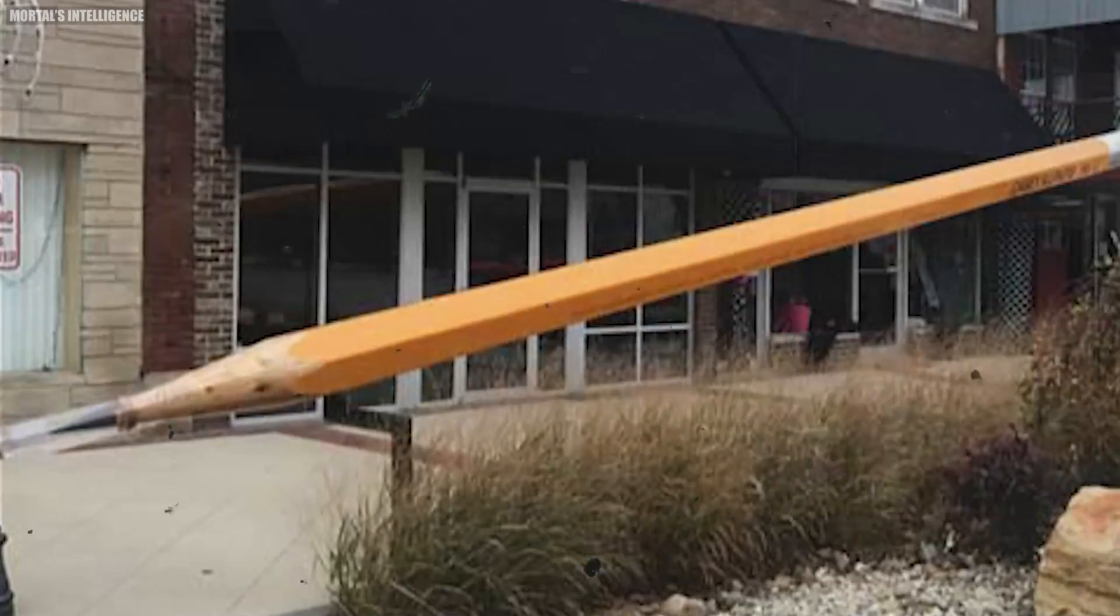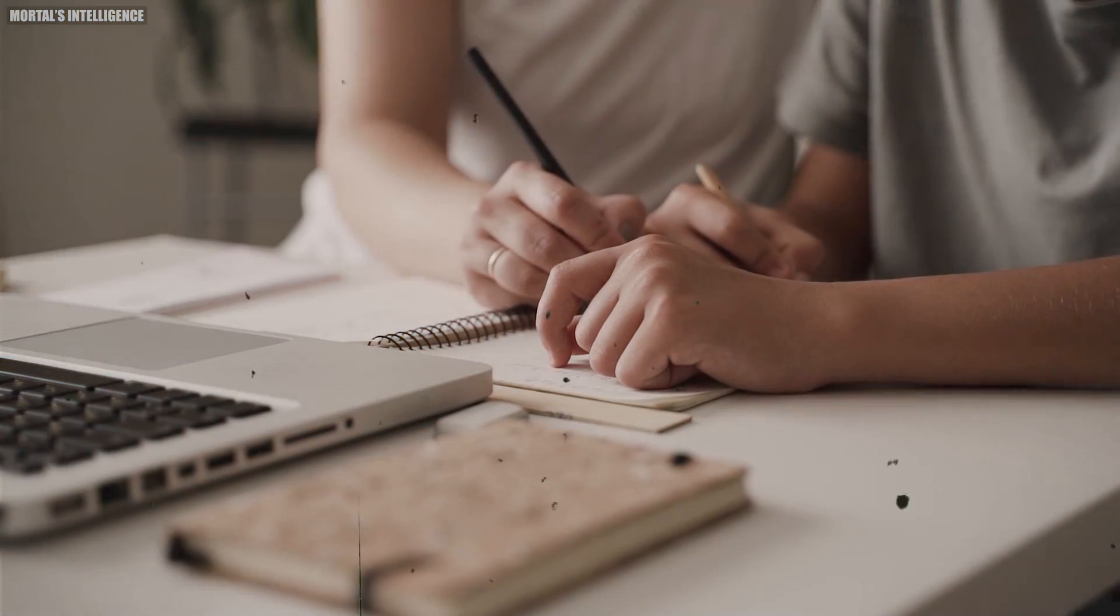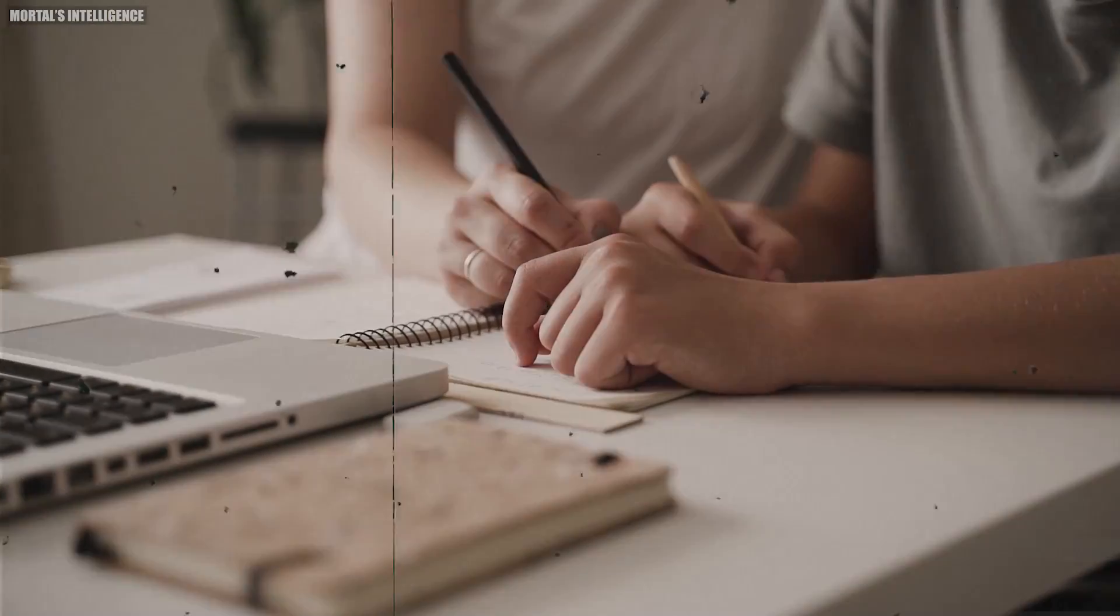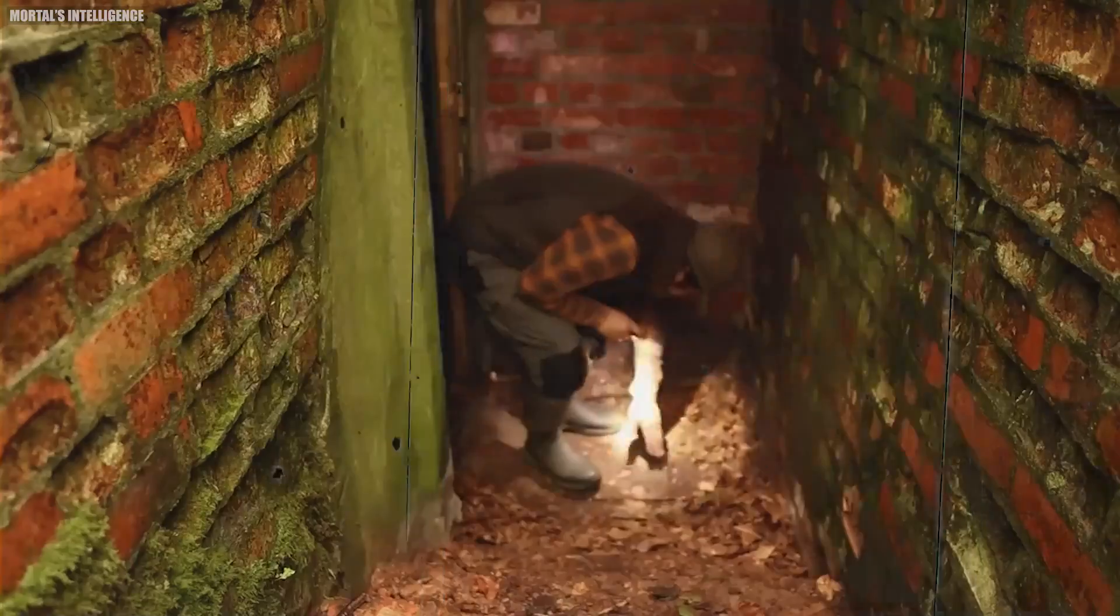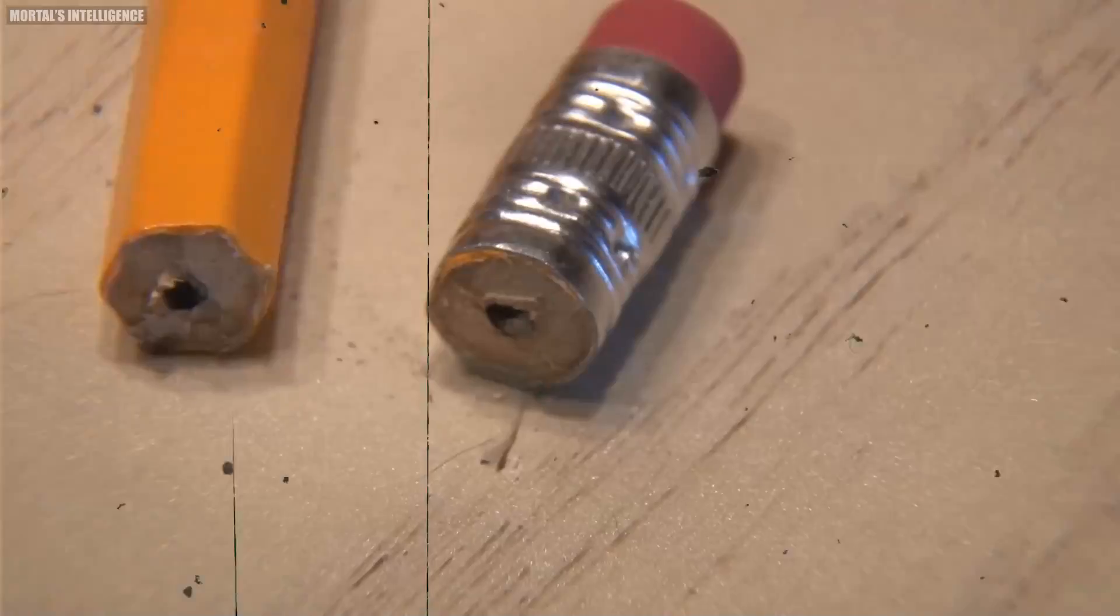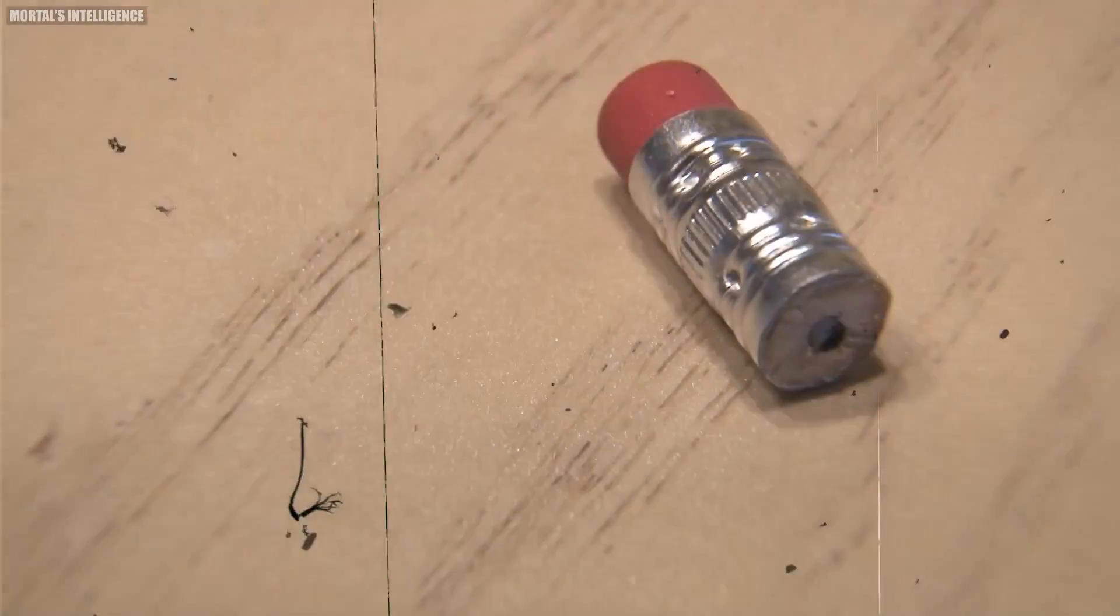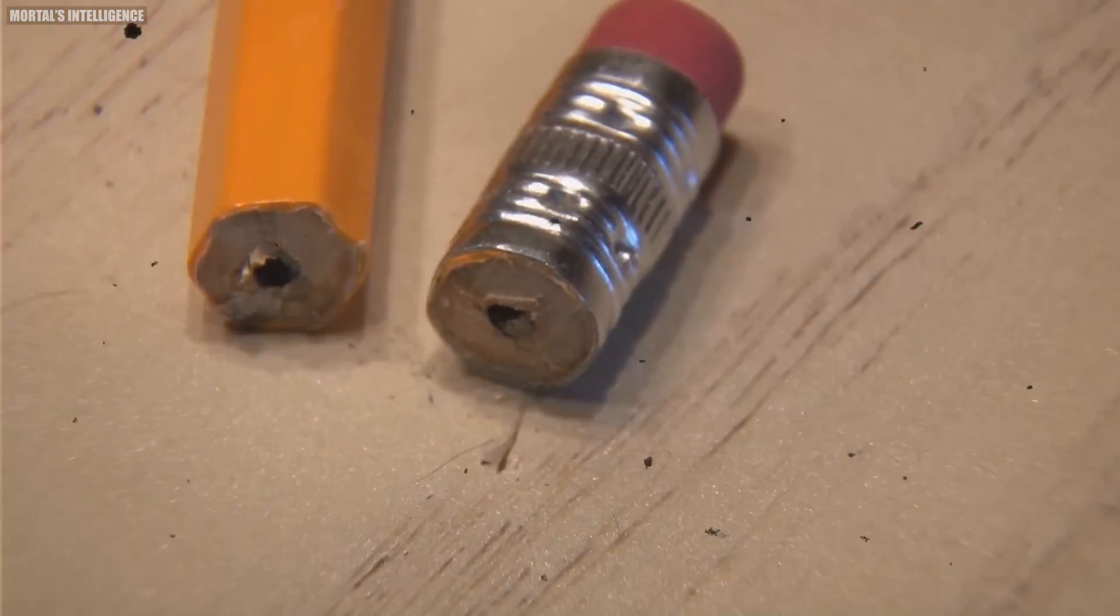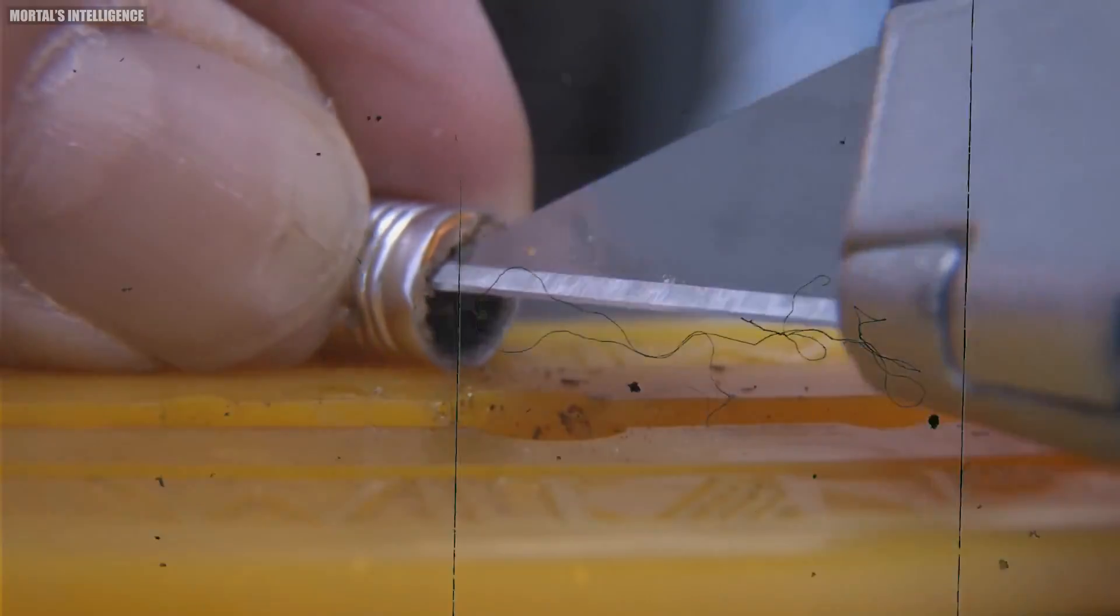Did you know that pencils have been used in some unexpected ways throughout history? During World War II, pencils were used to create secret compartments for hiding messages and other small items. Soldiers would hollow out the center of the pencil and insert a tiny scroll containing important information. This ingenious use of pencils helped to keep vital information safe and secure during the chaos of war.